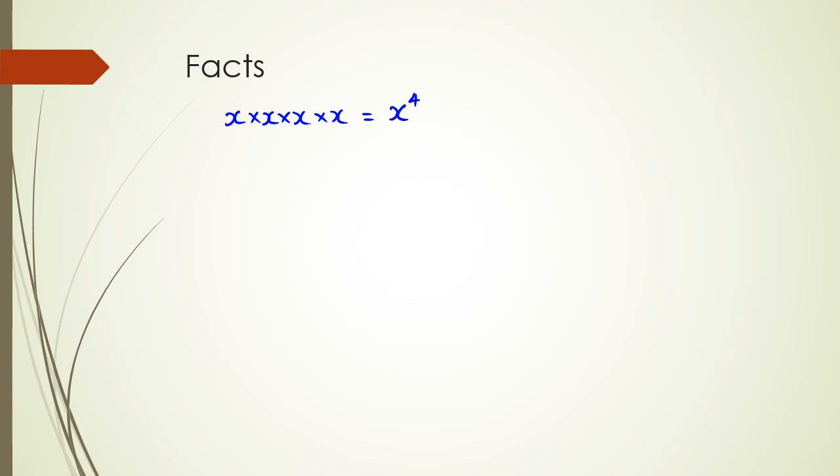Now one of the things that people end up doing is that when they see x times x times x times x, they actually put it as 4x and this is actually wrong. Because remember, 4x is actually 4 times x, but that's not what we have, because we've actually got x multiplied by itself four times.